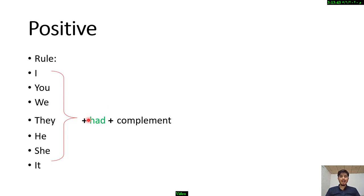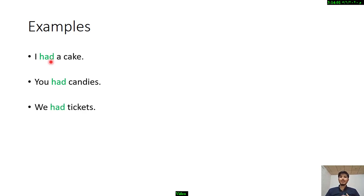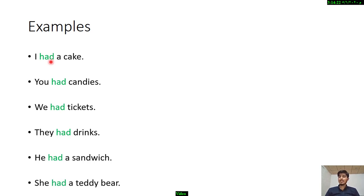I had, we had, he had, she had, and so on, plus complement. For example: I had a cake. You had candies. We had tickets. They had drinks — water, lemonade, or juice. He had a sandwich. She had a teddy bear, a toy teddy bear.